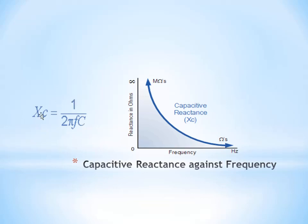This is because the relationship is inversely proportional. Xc is inversely proportional to frequency F.